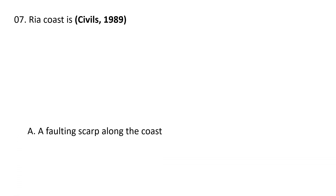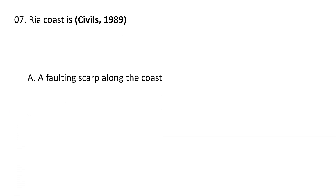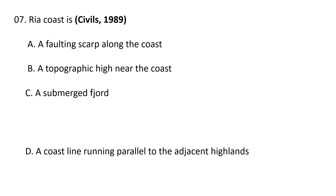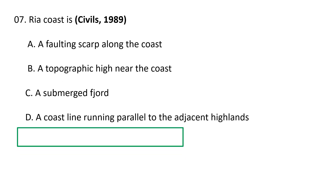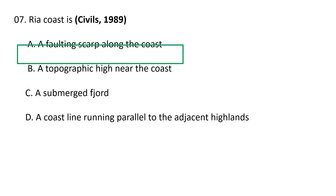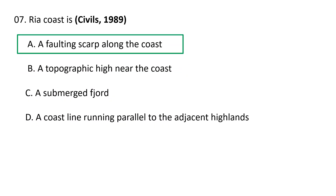Next question: Ria coast is — A) a faulting scar along the coast, B) a topographic high near the coast, C) a submerged ria, and D) a coastline running parallel to the adjacent island. Ria coast is a faulting scar along the coast — a coastline having several parallel ridges separated by prominent ridges extending inland. So A is the correct answer.